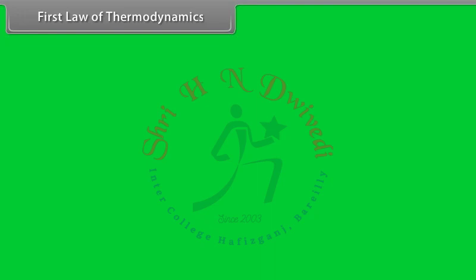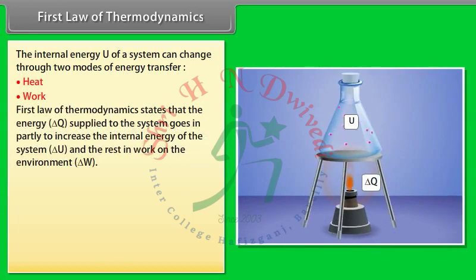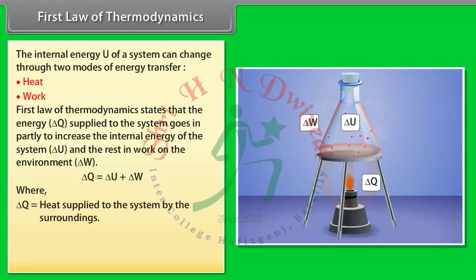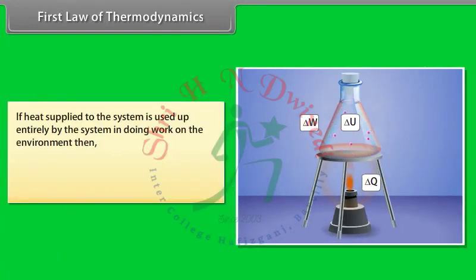The First Law of Thermodynamics states that the internal energy U of a system can change through two modes: heat and work. The energy ΔQ supplied to the system partially increases the internal energy ΔU and the rest does work on the environment ΔW, giving: ΔQ = ΔU + ΔW. If heat supplied is used entirely to do work, then ΔU = 0, giving ΔQ = ΔW.